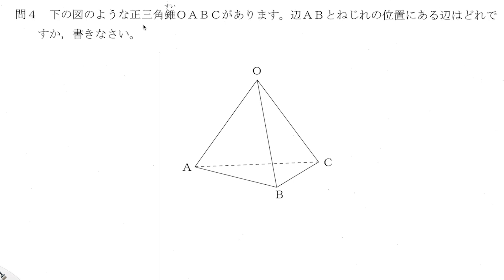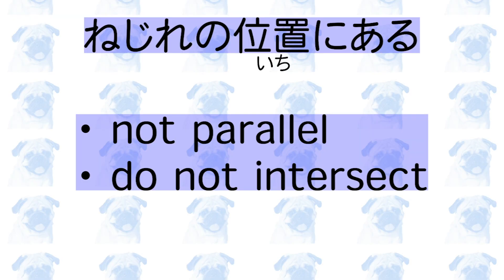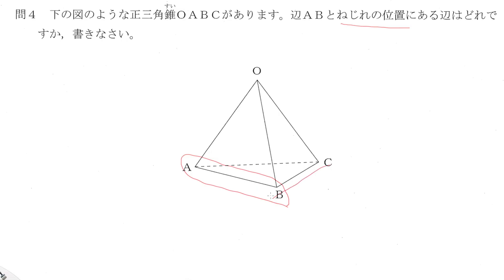下の図のような正三角錐があります. 辺ABとねじれの位置にある辺はどれですか — the keyword here is ねじれの位置. We need to eliminate these two because they are intersecting with A and B, as well as OA and OB. So the only one that's left is OC.